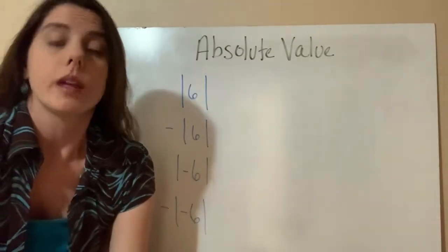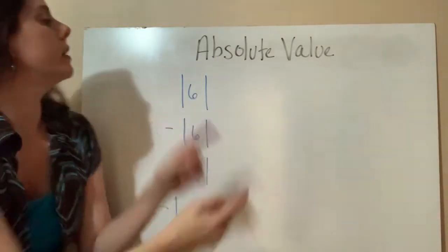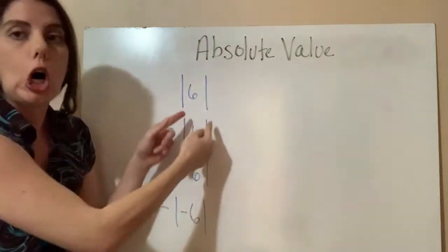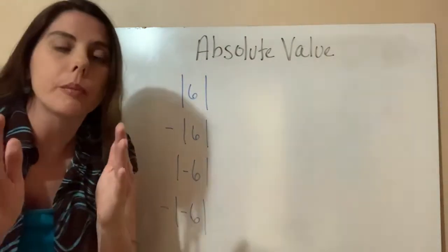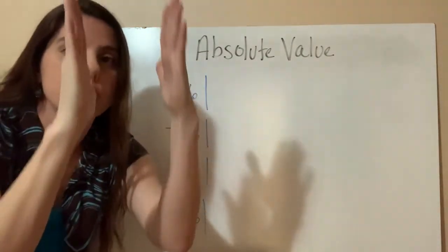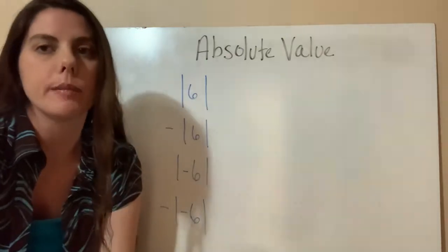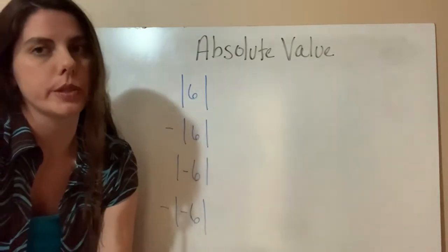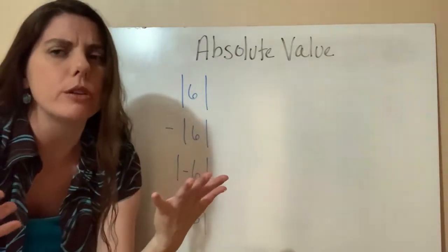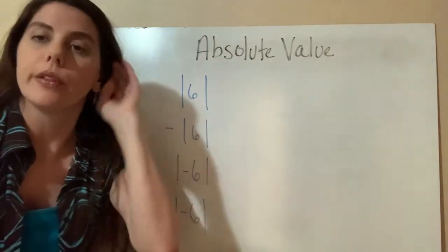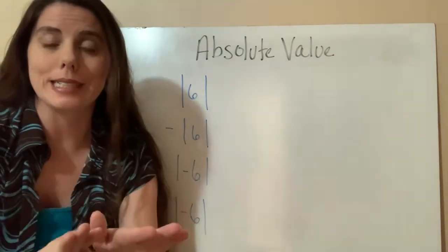Absolute value. Anytime you see these nice long bars — they're kind of like parentheses, but they're just straight up and down — that is your absolute value symbol. So what does absolute value mean? Think of it in terms of distance.